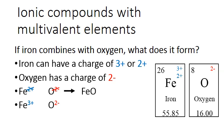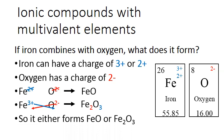When we have iron 3+ and oxygen 2-, they're different, so we cross down those ionic charges and we end up with Fe2O3. So when they combine, they either form FeO or Fe2O3.